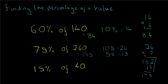And finally 15% of 40. Well 10% equals 4, 5% equals 2. Well 10% and 5% is equal to 15%, so 4 and 2 is 6. Our answer of 15% of 40 equals 6.